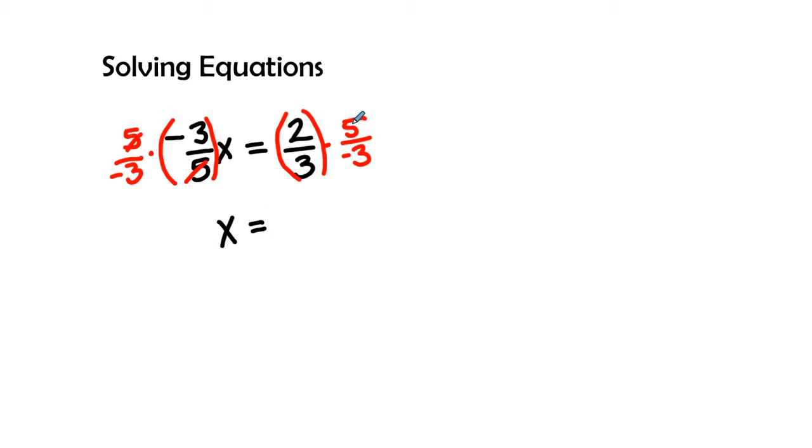Next, we're going to look at two times five is ten, and then three times negative three is negative nine. So we get negative ten over nine as our answer.